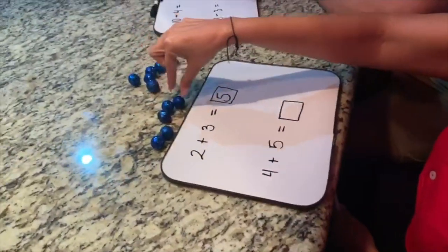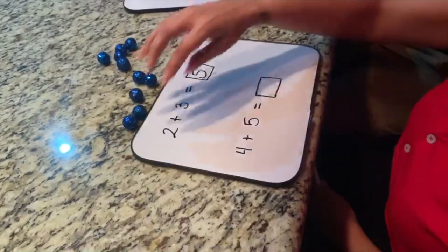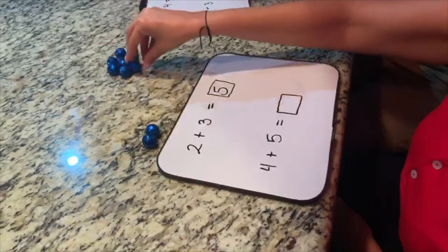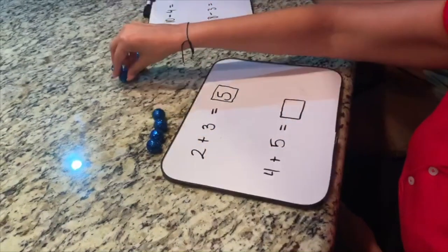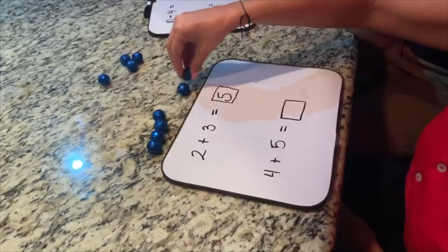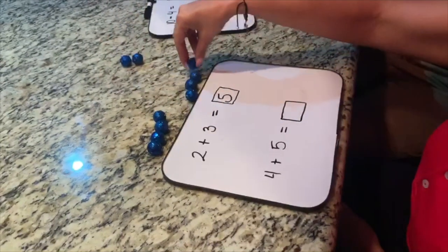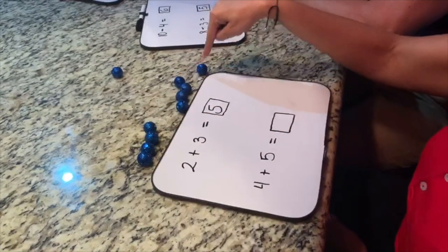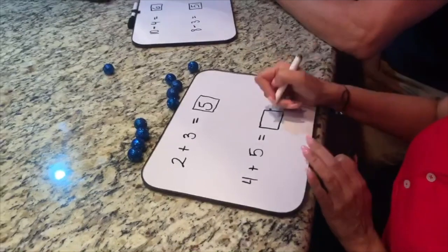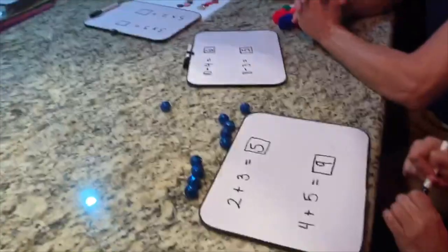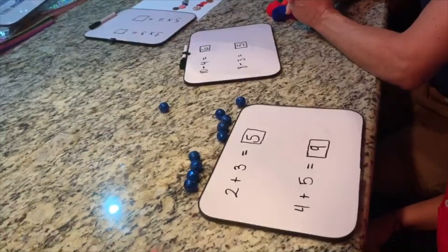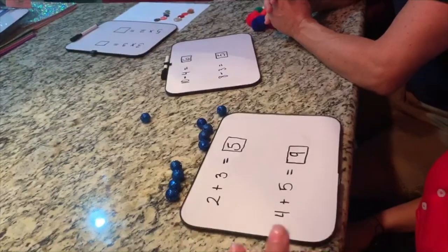Go ahead and show us 4 plus 5. Now she has two groups and can count one by one to find her answer. This makes all of these math problems more concrete because they can physically see the items, touch the items, and match them so that they correspond with the numbers represented on their page.